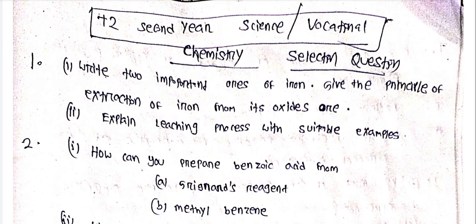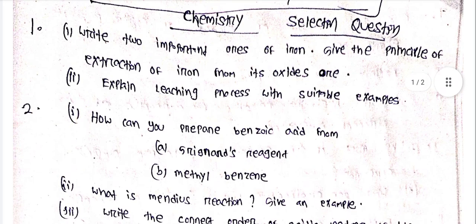First to second year science and vocational stream chemistry exam, selection question. Write two important ores of iron. Give the principle of extraction of iron from its oxides ore.